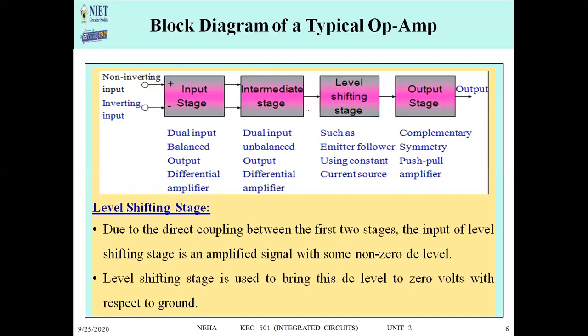Next is the level shifting stage. As the name suggests, it shifts some level of DC supply voltage — from 0 to some DC level, or from some DC level to 0. For level shifting, we mostly use an emitter follower, also called a constant current source or common collector configuration. The level shifting stage is used to bring the DC level to 0 volts with respect to ground.